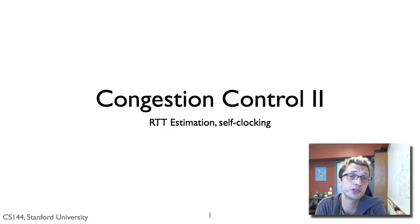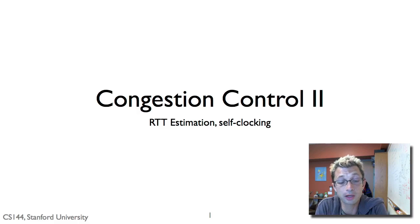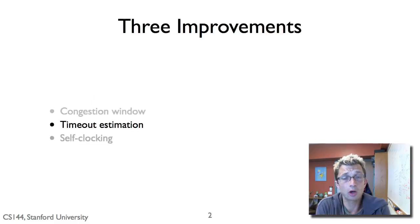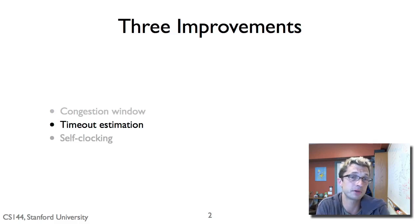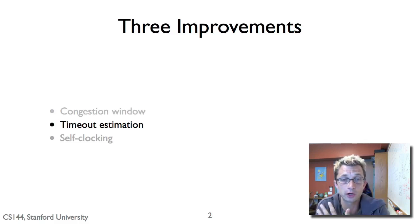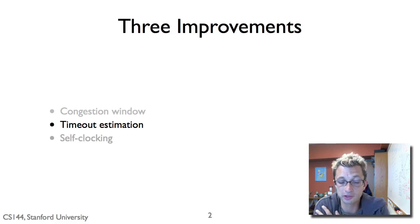In this video, I'm going to talk about two additional mechanisms that TCP Tahoe introduced to control congestion: better RTT round-trip time estimation, and self-clocking. To recall, TCP Tahoe introduced three basic mechanisms that allowed it to tame congestion and essentially allowed the internet to work again. The prior video talked about a congestion window and the idea of slow start and congestion avoidance states. Now let's talk about the second mechanism: timeout estimation.